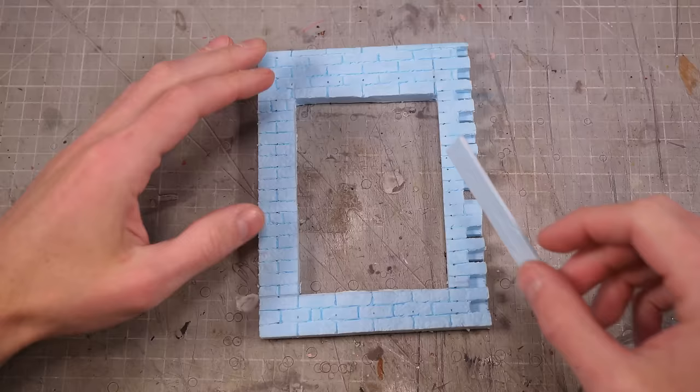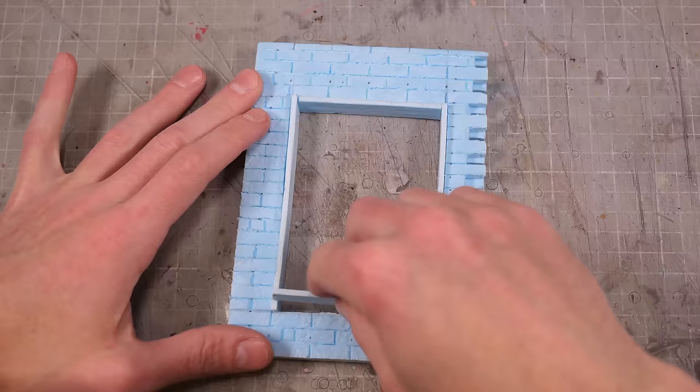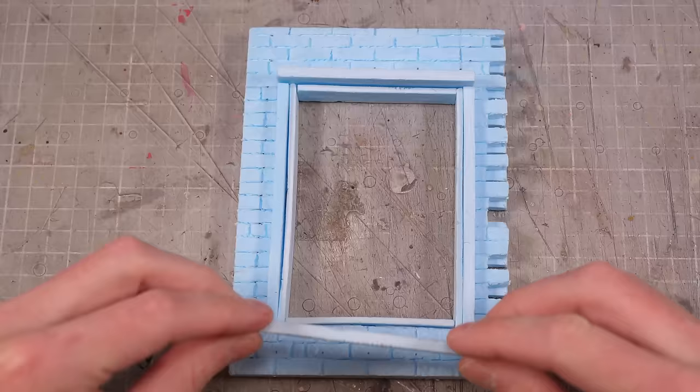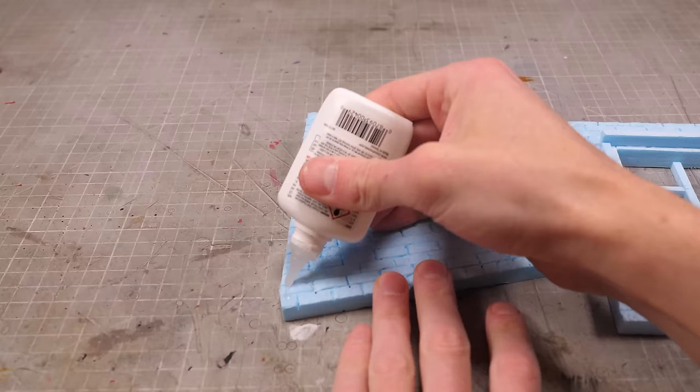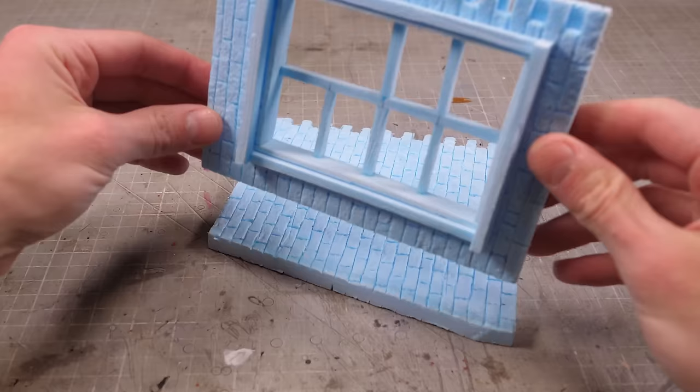To frame my window I'll make a window frame with some thin strips of foam that I've cut to size and texturized with a stiff metal brush before adding the grills in the middle.